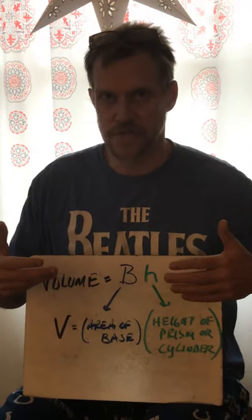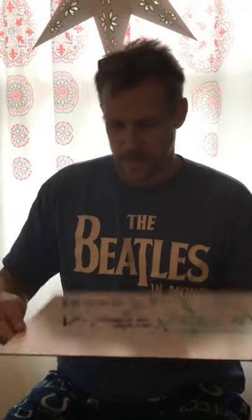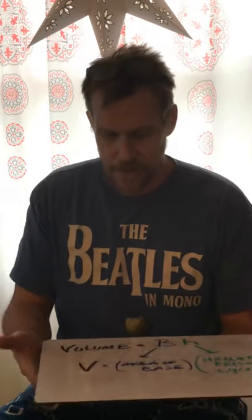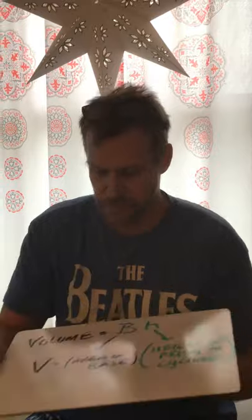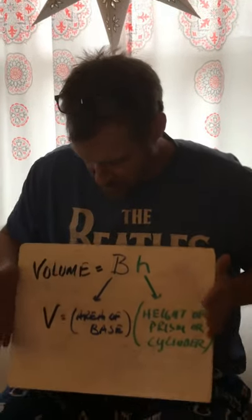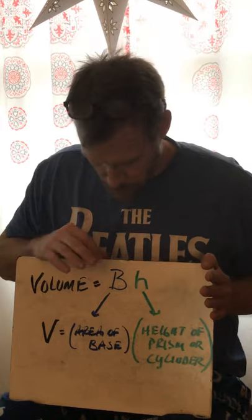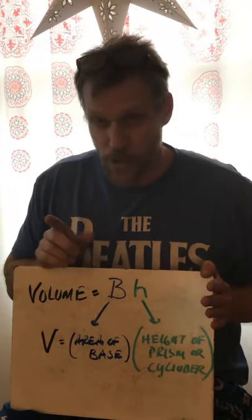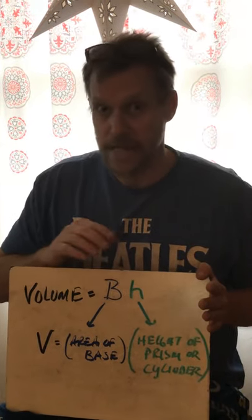There's a general formula we use for volume. Volume, if you don't know, is basically the amount of space that fills something up — whereas surface area is the distance of the areas around everything. Volume is like: if I were to fill this up with water, how much can it take? How much space does it fill up? For prisms and cylinders there's a general formula — you'll see it a lot. Your formula sheet may say B times H.